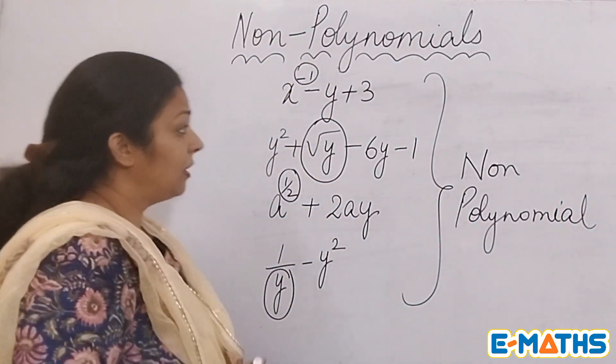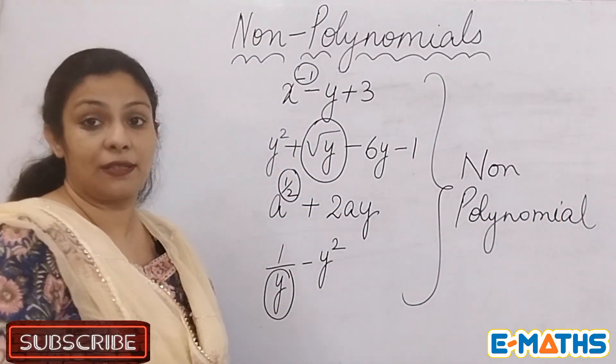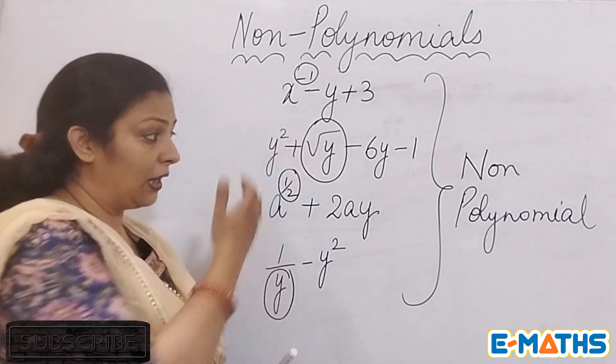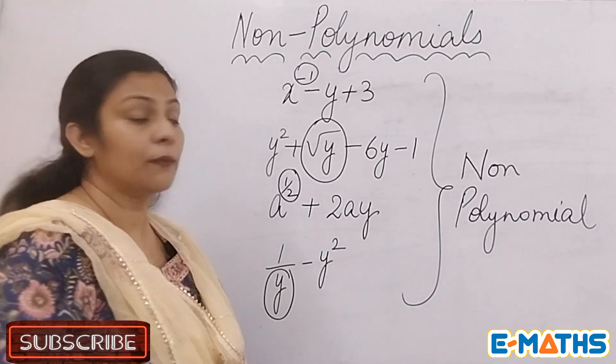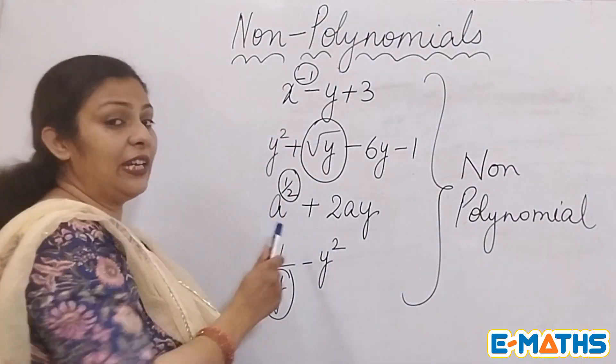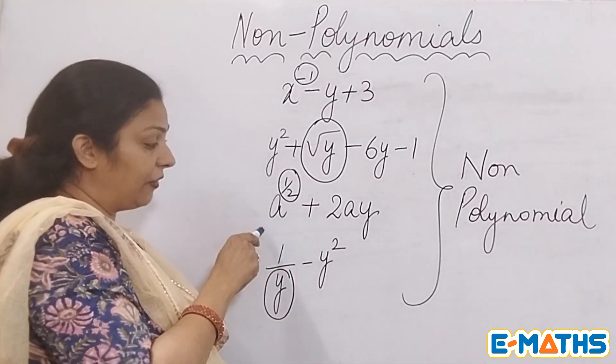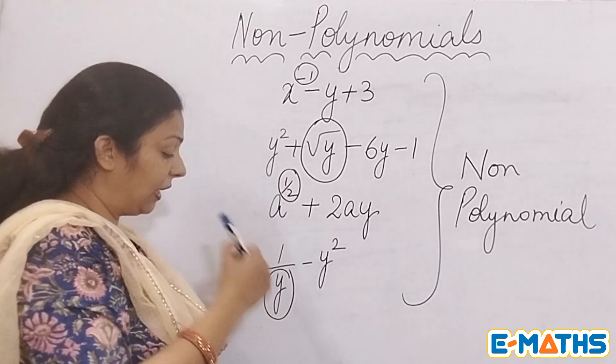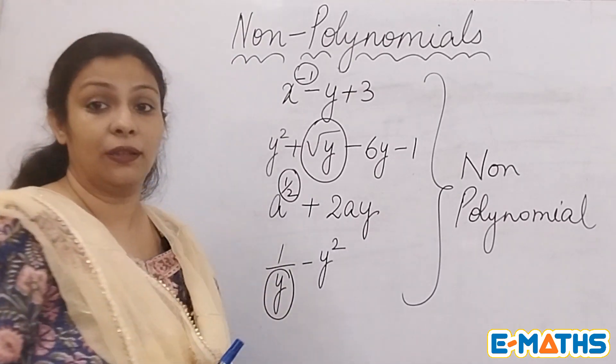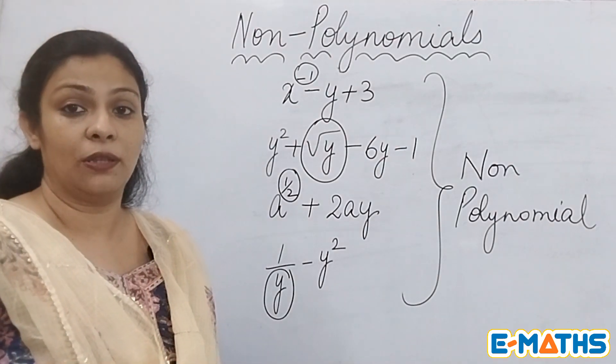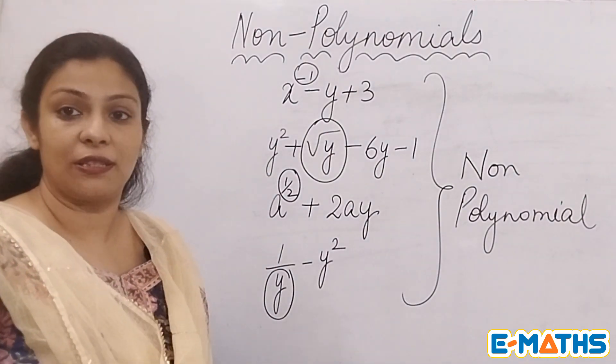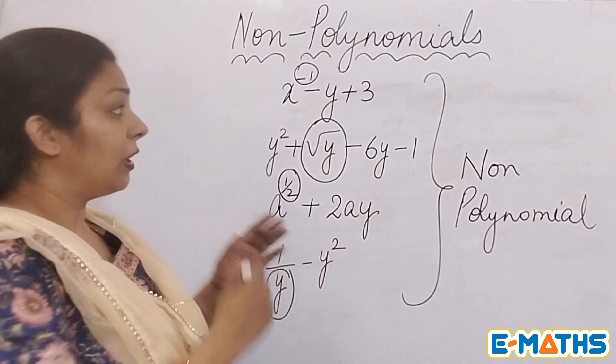So if you come across any expression, these are expressions, but if someone asks you 'are these polynomials as well?' the answer is no. Because we cannot have a negative power, any variable under root, any variable having a fractional power, or any variable in the denominator - it makes the expression a non-polynomial.